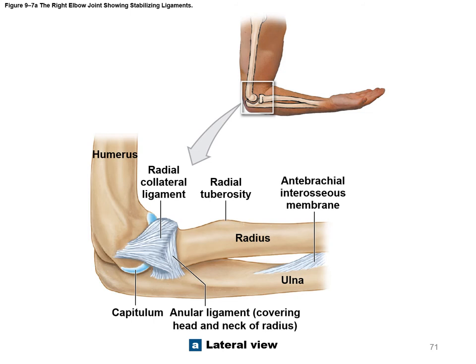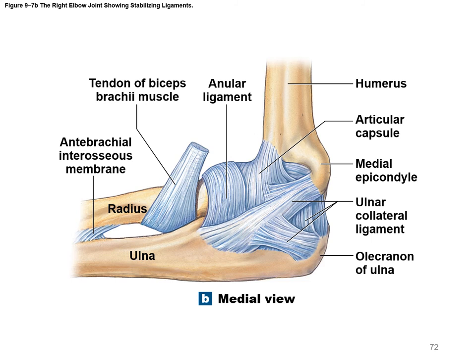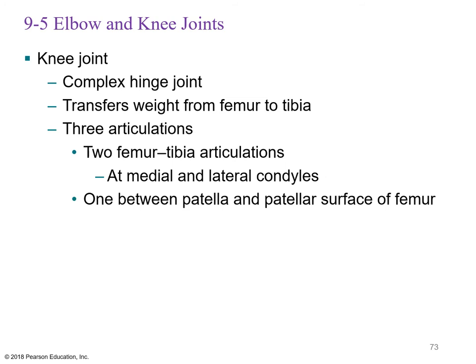Images of the elbow show the radial collateral ligament (also called the lateral collateral ligament) on the lateral side, the annular ligament wrapping around the radial head, the ulnar collateral ligament on the medial side, the articular capsule, and the biceps brachii tendon inserting into the radial tuberosity.